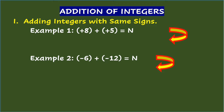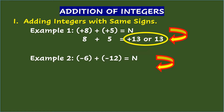Let's start with adding integers with same signs. Example 1: Positive 8 plus positive 5 equals n. The absolute value of positive 8 is 8, and the absolute value of positive 5 is 5. Adding the absolute values of 8 and 5 gives you 13. Then affix the common sign to the sum, which is the positive sign. So positive 8 plus positive 5 equals positive 13, or simply 13.